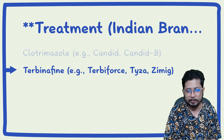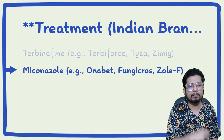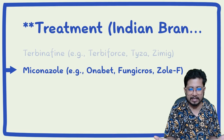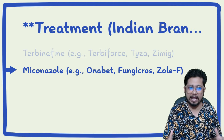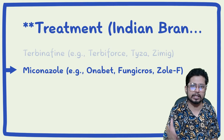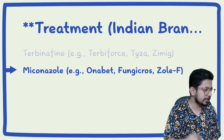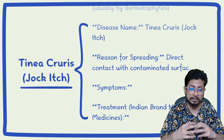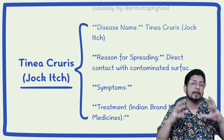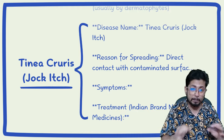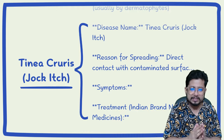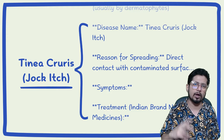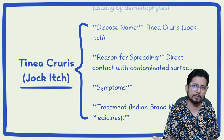Miconazole — available as cream in India — along with Fungi Cross and Zol-F are Indian brand names that work well against tinea cruris. Tinea cruris and ringworm infection have very similar symptoms and similar treatment protocols, and are caused by similar fungi. The key difference is location: tinea cruris is specifically in the groin or inner thigh area, while ringworm can appear on any part of the body.